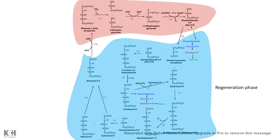All of these sugar intermediates can be taken and used in several metabolic processes of the plant, and that is how the Calvin cycle takes place. I hope this was easy and understandable. If you liked this video, give it a thumbs up and don't forget to leave a comment — your comments give me motivation to make more videos. Thank you.